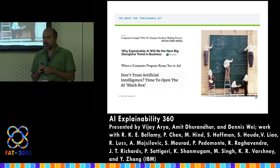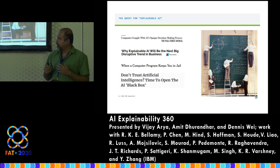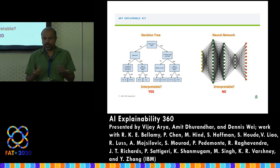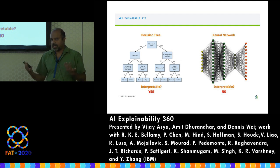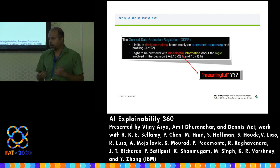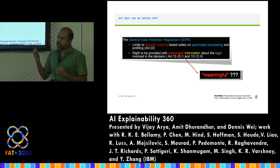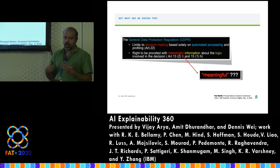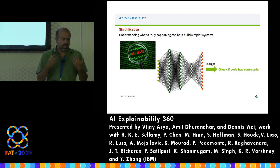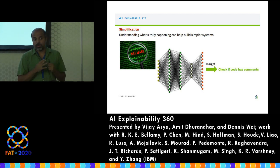Explainable AI has received a lot of press and attention in recent years. The main reason is the proliferation of black box models like deep nets, which are not directly interpretable. You need other mechanisms to understand how decisions are made. There is also the GDPR in Europe, which requires that any automated decision-making system that makes decisions for humans should also provide meaningful information about how the decision was arrived at. Trust is one of the key motivations for explainability.